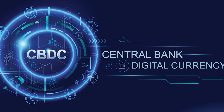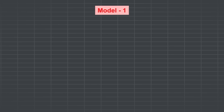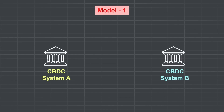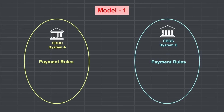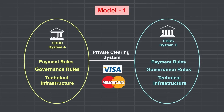This brings us to the last question: how will the CBDC model work, and is it good enough to actually replace the SWIFT system? Currently there are three models based on which CBDC cross-border payments could happen. The first model is very similar to SWIFT, whereby two central bank systems of respective countries will have their own payment rules, governance, and technical infrastructure, but when they transact with each other, there'll be a private clearing system — similar to how Visa and MasterCard work for credit cards.